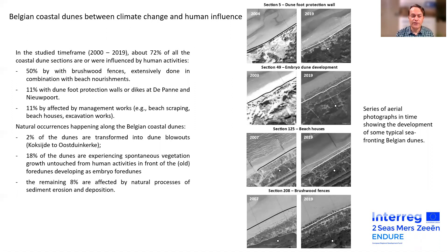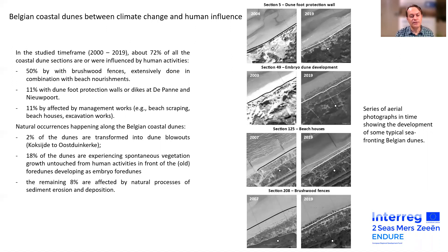We also have 28% of natural occurrences happening along the Belgian coastal dunes. So 2% of the dunes are transformed into dune blowouts, and 80% of the dunes are experiencing spontaneous vegetation growth regardless of human activities. This development of vegetation also stimulates the development of foredunes as embryo foredunes. The remaining 8% are affected by natural processes of sediment erosion or deposition but do not fall in any of these categories.